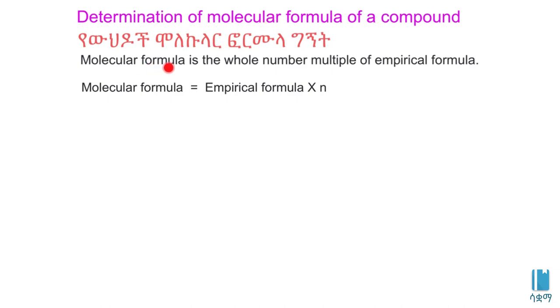The molecular formula is equal to the empirical formula times n. The empirical formula is the simplest ratio. When the molecular formula is required, we need the molecular mass.